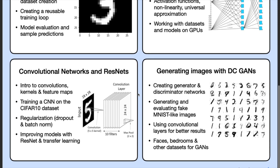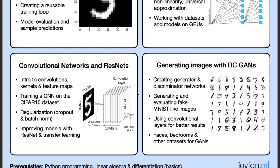Next, we will learn about convolutional neural networks and how convolutions improve upon feed-forward neural networks using kernels and feature maps. We will train a CNN on the CIFAR-10 dataset. We will also learn many regularization techniques like dropout and batch normalization.